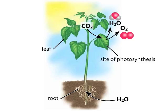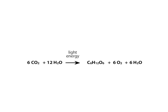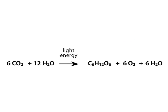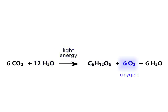The basic process of photosynthesis can be summarized using the equation shown here. Carbon dioxide, water, and light energy combine to yield the products of sugar, oxygen, and water.